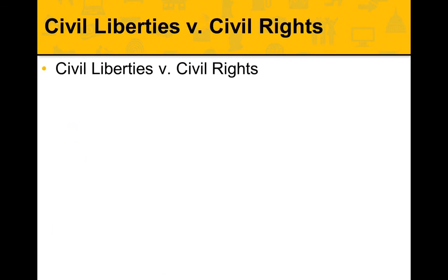Let's start by differentiating between civil liberties and civil rights. These terms are often used interchangeably, but they don't mean the same thing. Civil liberties are areas where the government should rarely intrude upon the free choice of individuals — things in the Bill of Rights. Think of specific individual rights like freedom of speech, freedom to practice a religion, and fair trials. These are restraints on the government, or what the government should not do.